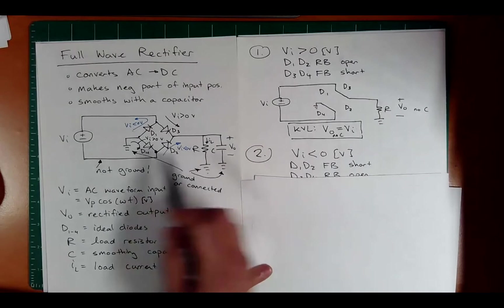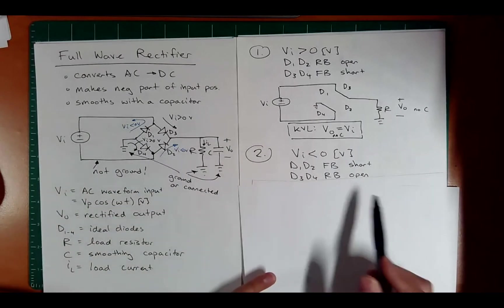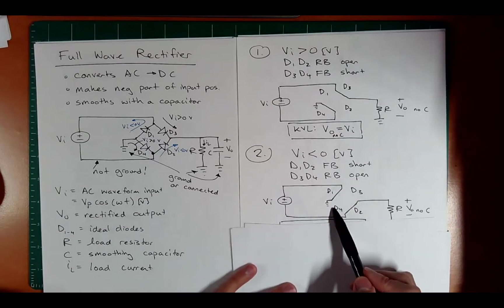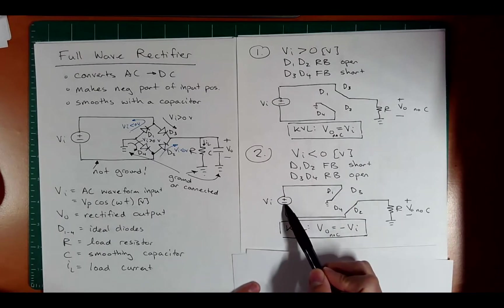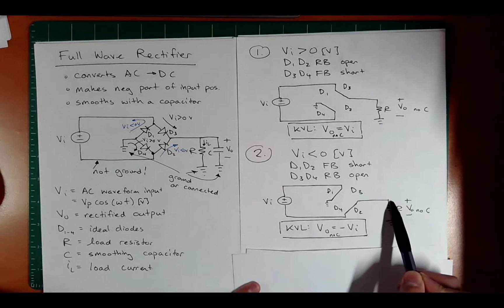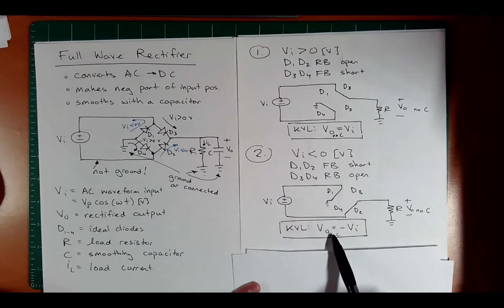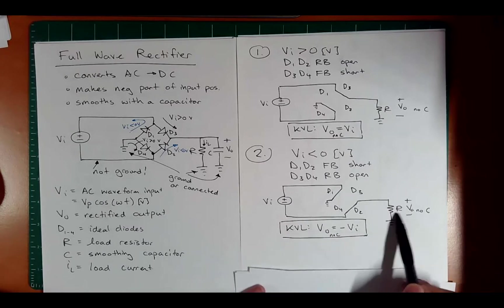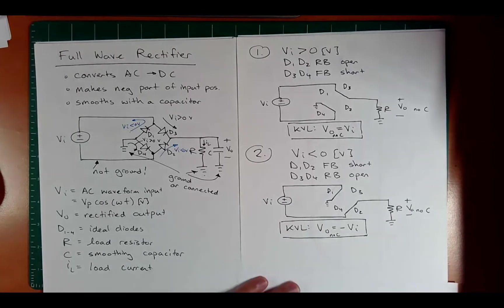In the second case where VI is negative, where diode 1 and diode 2 are going to be in forward bias and diode 3 and diode 4 will be in reverse bias, the current is going to go through the bottom here, through diode 2, through here. And again, by KVL, Vout is going to be similar to VI. It's going to be actually negative VI, but the negatives cancel because the negative, negative, and you're still going to get a positive value for Vout.